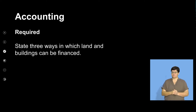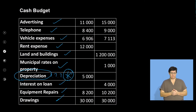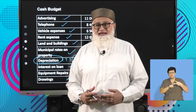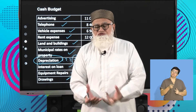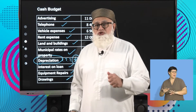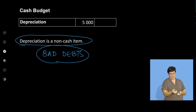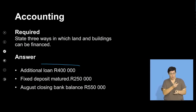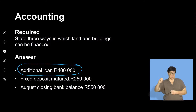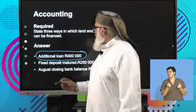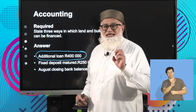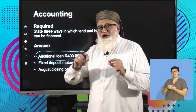Now the question says: state three ways in which land and buildings can be financed. Looking at our information, we need to purchase land and buildings. First, there is an additional loan of 400,000 Rand. Based on the given information, that loan was taken to the value of 400,000 Rand, and therefore that loan will allow you to finance the land and buildings.